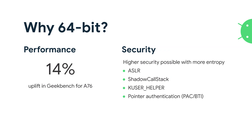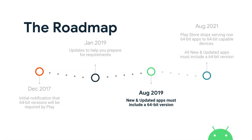By the way, Android has been supporting 64-bit for five years now. Where we are: we first announced this in late 2017, we made the policy very clear in January of this year, and starting August we've enforced that new apps and updates all have to support 64-bit.